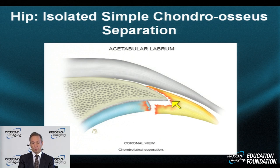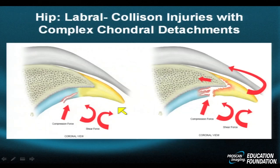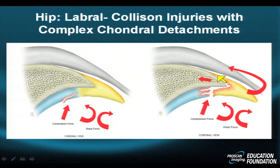Here's an example of a labro-acetabular separation — some refer to this as a chondro-osseous separation. The separation may include fibrocartilage from bone, fibrocartilage from hyaline cartilage, or fibrocartilage from both. Occasionally you will even see the capsule come off as well — a so-called triple separation. Complex forces may produce irregular tears involving the margin of the hyaline cartilage, resulting in separation of the fibrocartilage from both the hyaline cartilage and the bone, with concomitant capsular separation.